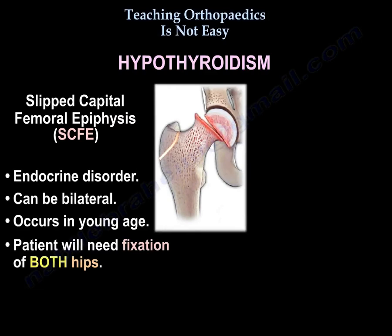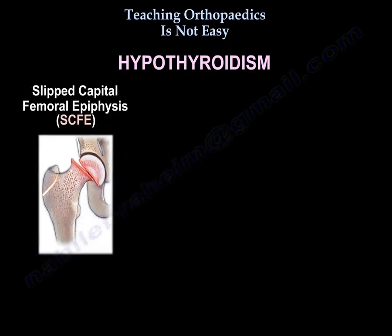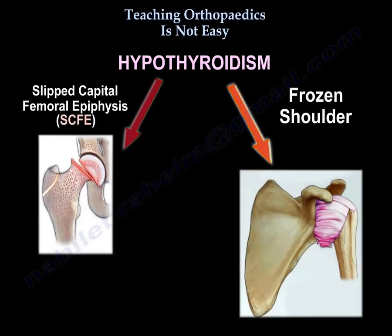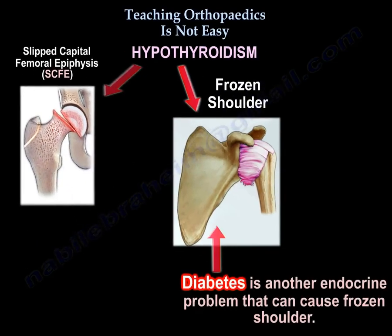It can be bilateral. It occurs in younger age, and the patient will need fixation of both hips. Hypothyroidism can also cause a frozen shoulder. Diabetes is another endocrine problem that can cause frozen shoulder.